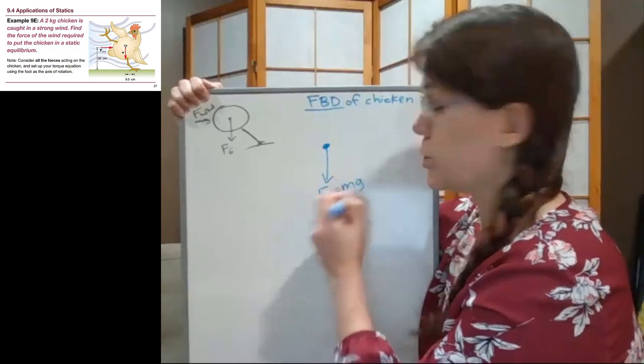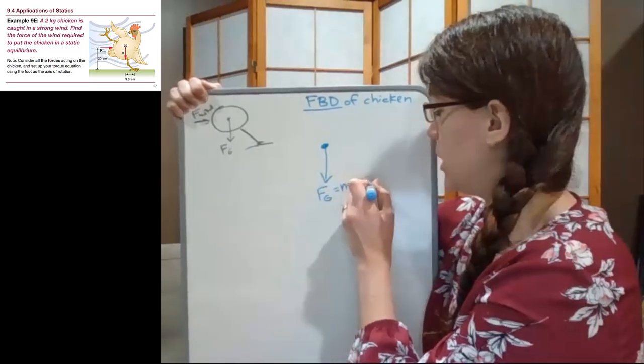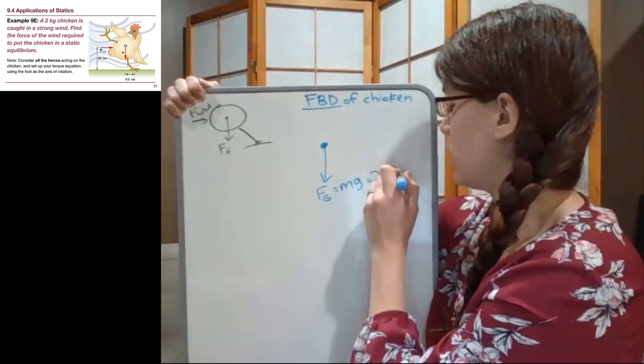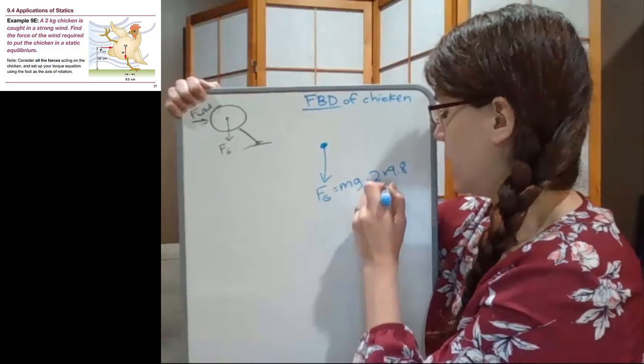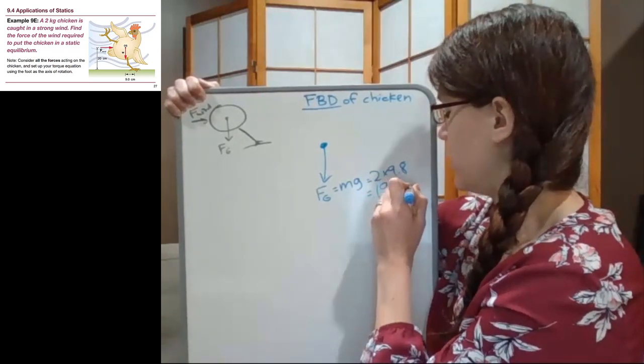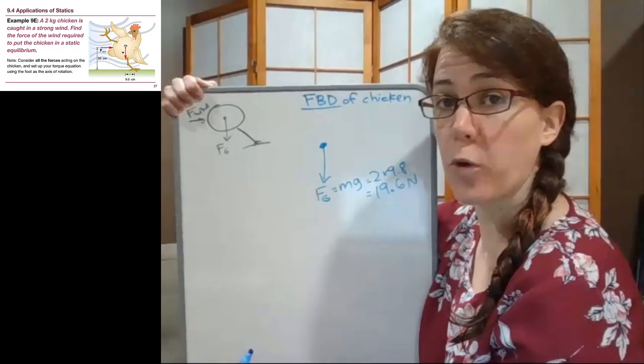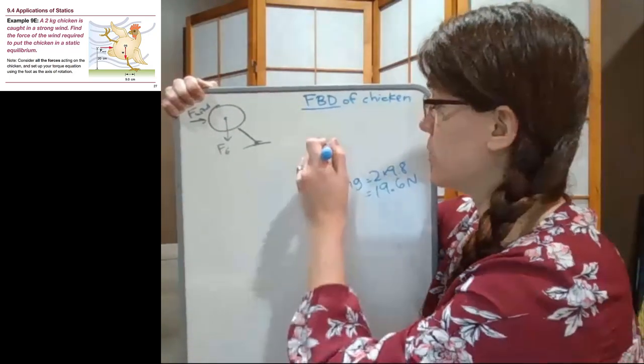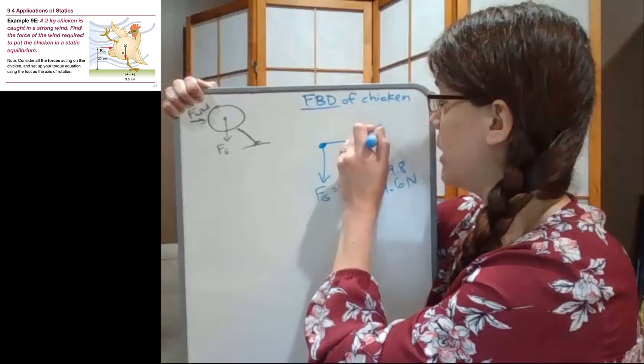Which is m times g, and so in this case for the two kilogram chicken, two times nine point eight, we get 19.6 newtons. We have that the force of the wind on our slide is pointing to the right, so we will have it pointing to the right.